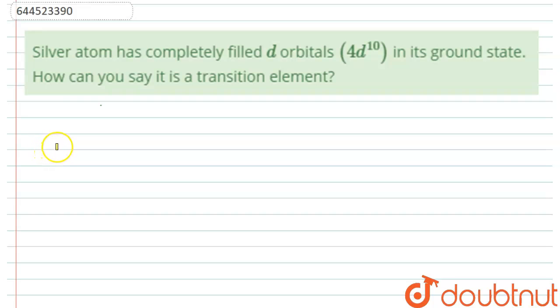Hello students. First of all, let us look at the question here. The question asks us that silver atom has completely filled d orbitals in its ground state, 4d10 it has. But still, how can you say that it is a transition element is something that we need to explain.